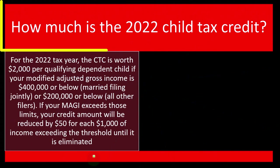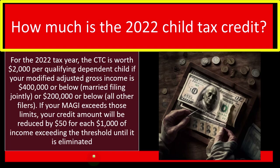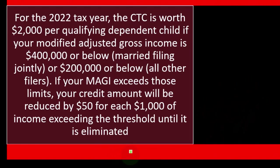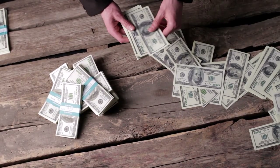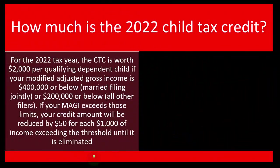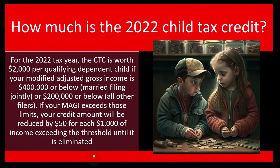How much is the 2022 Child Tax Credit? For the 2022 tax year, the CTC is worth $2,000 per qualifying dependent child if your modified adjusted gross income is $400,000 or below for married filing jointly, or $200,000 or below for all other filers. If your MAGI exceeds those limits, your credit amount will be reduced by $50 for each $1,000 of income exceeding the threshold until it is eliminated.